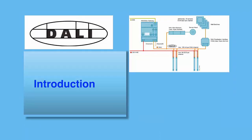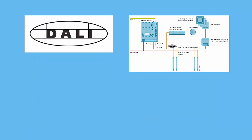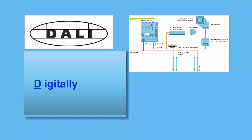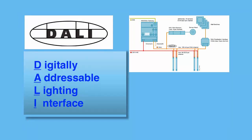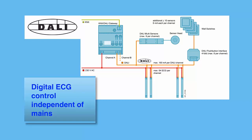DALI stands for Digitally Addressable Lighting Interface. It is a communication system for lighting systems where the quality of the dimmed light does not depend on the quality of the power distribution lines.